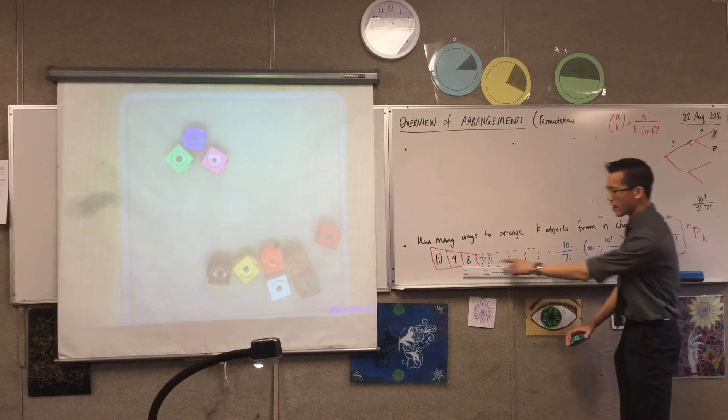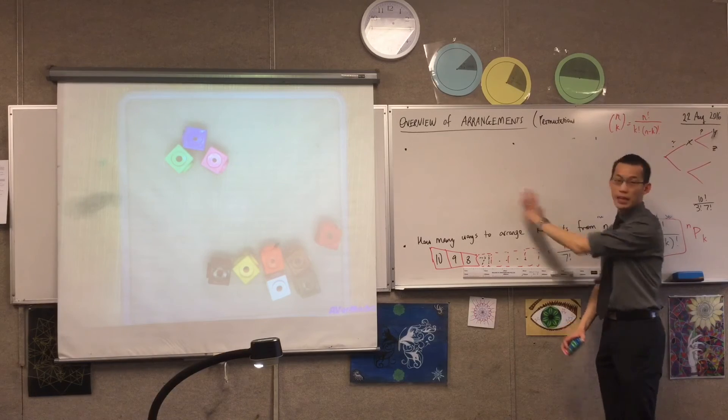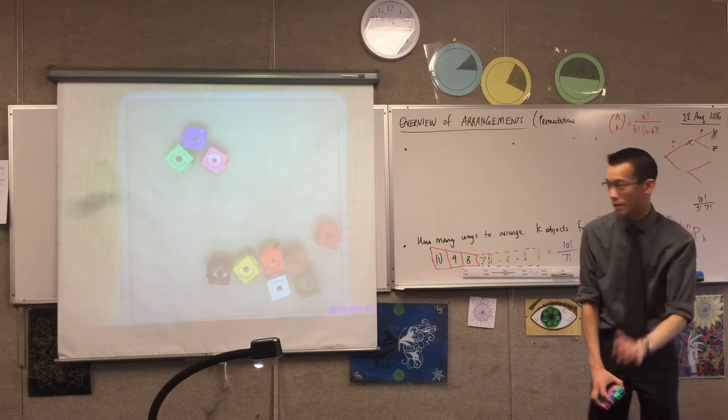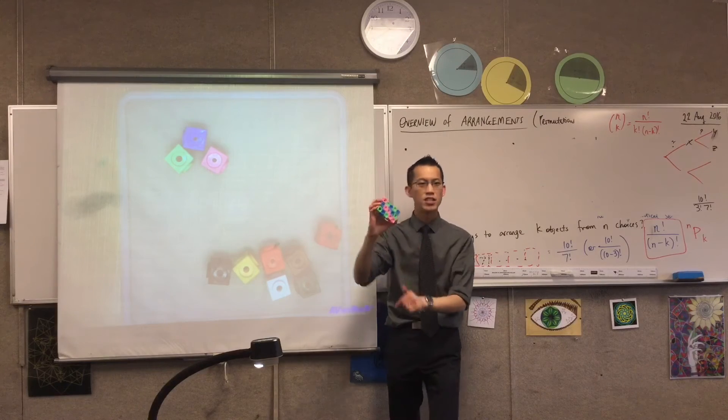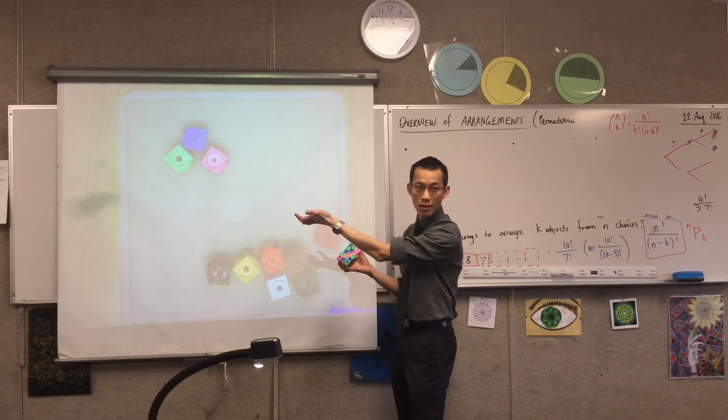They're all the same, so I have over-counted if I don't care about their order. Does that make sense? So, just like here, no, sorry, this one here, when we were looking at identical elements, it's kind of treating these as identical. You can rearrange them and still get the same pile.